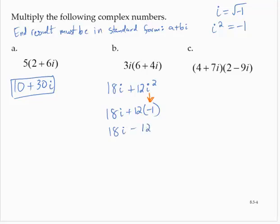That's still not right. The standard form is always a plus bi. The real part comes first. So we would write that as negative 12 plus 18i.